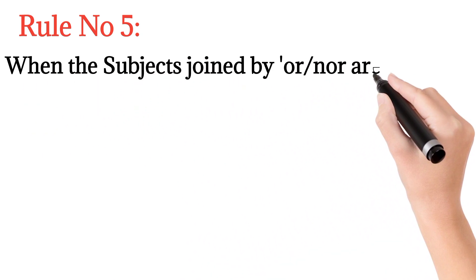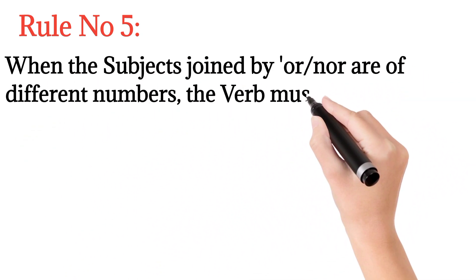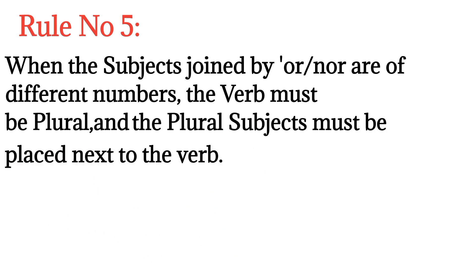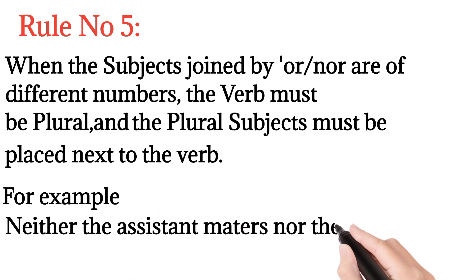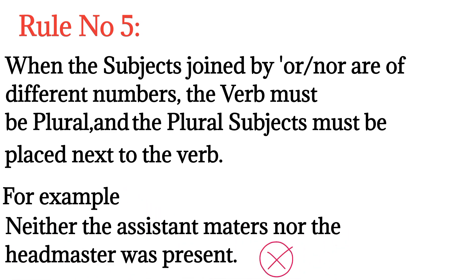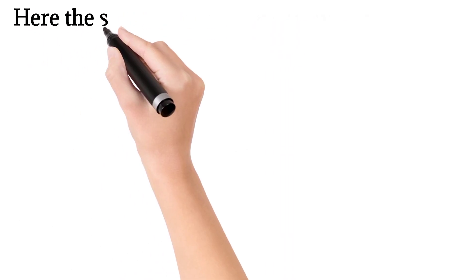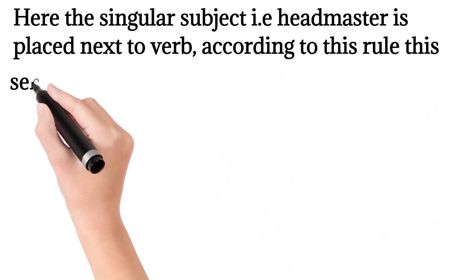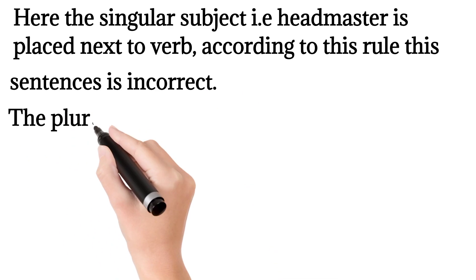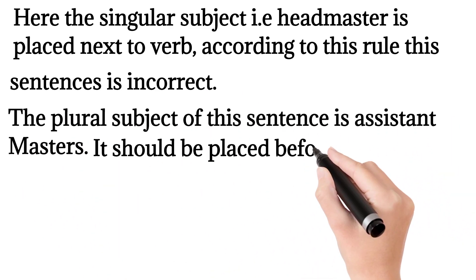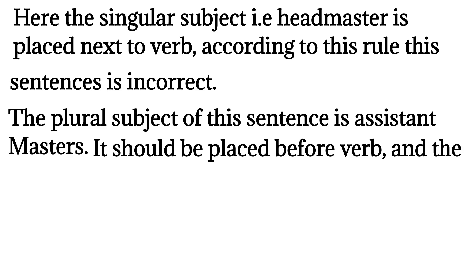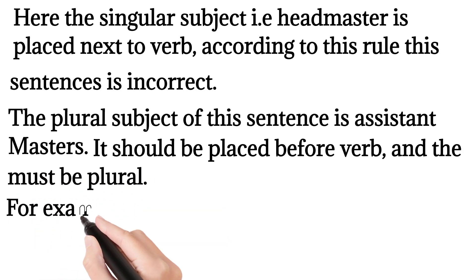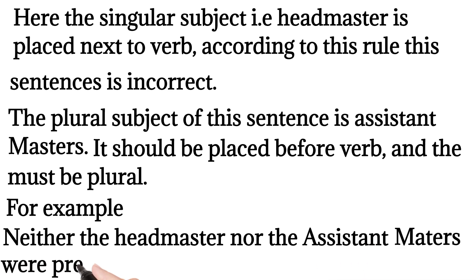Rule number five: When the subjects joined by 'or' or 'nor' are of different numbers, the verb must be plural, and the plural subject must be placed next to the verb. For example, 'neither the assistant master nor the headmaster was present' - here the singular subject, headmaster, is placed next to the verb. According to this rule, this sentence is incorrect. The plural subject of this sentence is assistant masters. It should be placed before the verb and the verb must be plural. The correct form is 'neither the headmaster nor the assistant masters were present'.